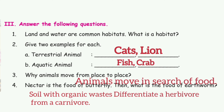Third question: why do animals move from place to place? Animals move in search of food. Fourth question: nectar is the food of butterfly. Then what is the food of earthworm? The answer is soil with organic waste.